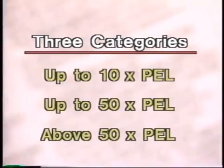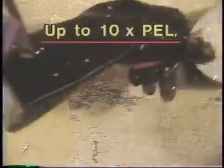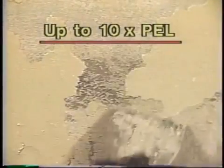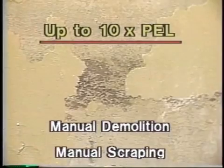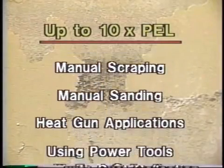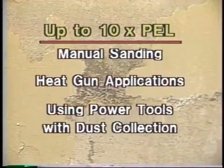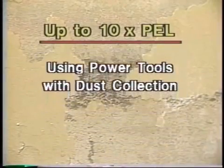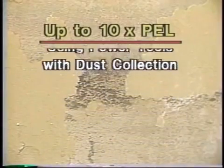In the first category are tasks in which workers have the potential to be exposed to up to ten times the permissible exposure limit, or PEL. Where lead-based paint is present, these include manual demolition, manual scraping, manual sanding, heat gun applications, and paint removal with power tools that have dust collection systems.